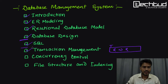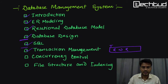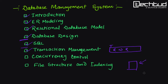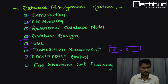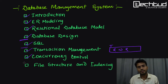Next is concurrency control. Concurrency means parallel access — if multiple users or systems are accessing our database at the same time, we need to maintain correctness. We will study how to handle this and also the various database protocols used to ensure correct concurrent access.